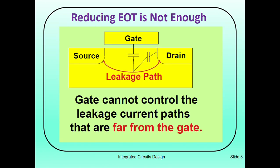Reducing equivalent oxide thickness is not enough because the gate cannot control the leakage current paths that are far from the gate. Here you can see we have the gate, source, and drain, and this is the leakage path — this is basically the channel between the drain and the source.